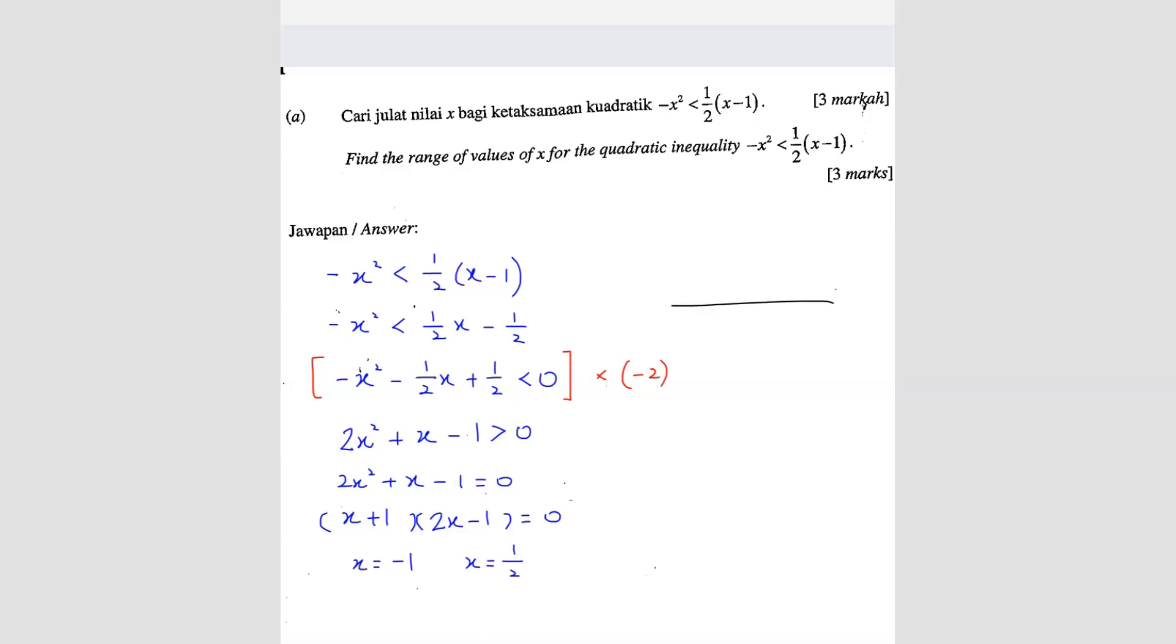Now, we draw this. So this side here should be negative 1, here should be 1 over 2. So since this is more than, more than means which side? That means it's going to be here and here. So we know from this that the answer we will have is x is less than negative 1 and also x is more than 1 over 2. These are your answers.